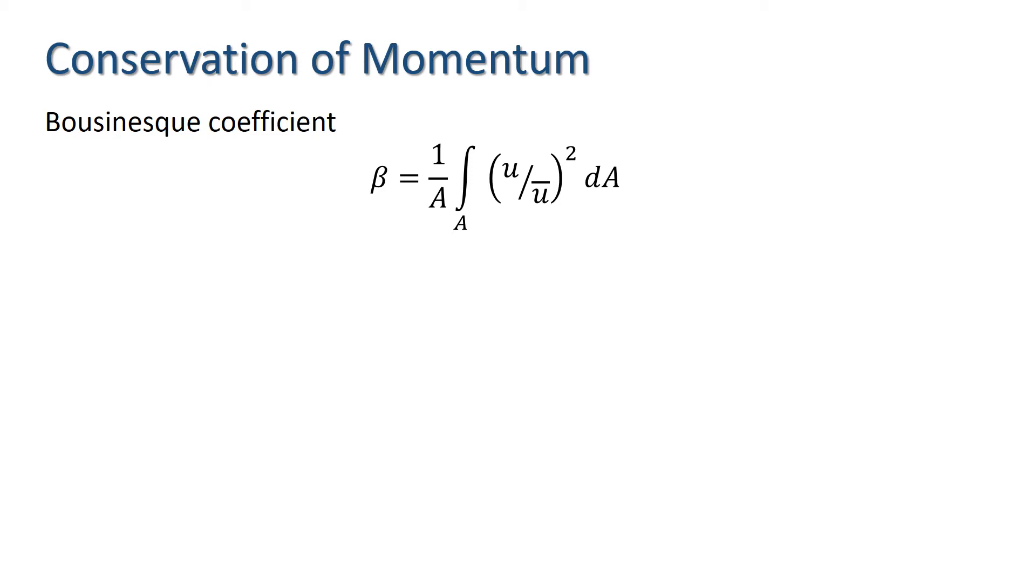Note that in our derivation we assumed implicitly that the velocity doesn't vary over the cross section of the stream tube. In practice we can introduce a correction factor called the Boussinesq coefficient to account for variation of velocity over the cross section. The Boussinesq coefficient multiplies the velocities in the momentum equation.